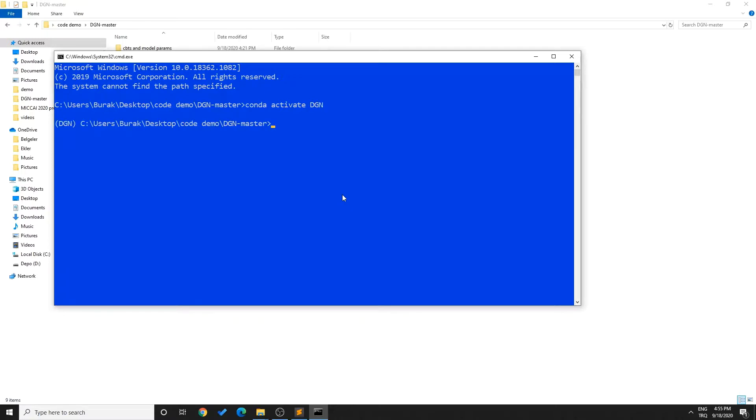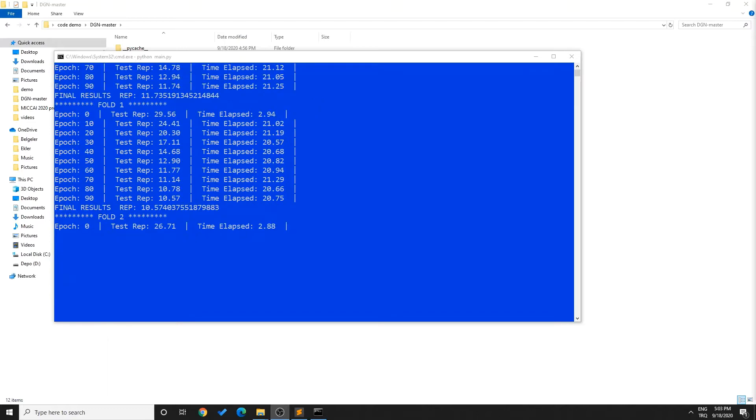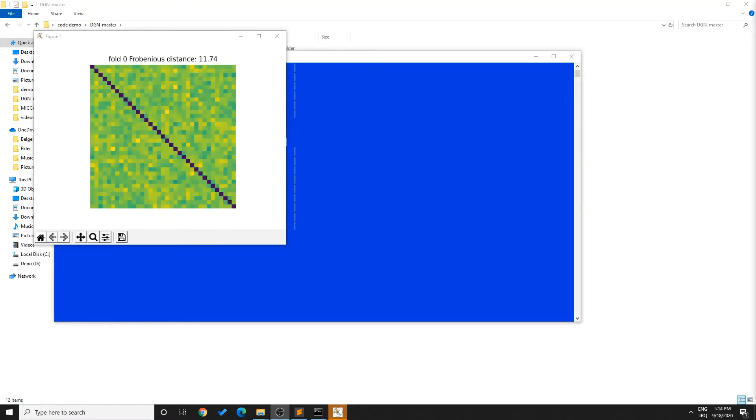Finally, type in python main.py to run the DGN on a simulated dataset. After the training, Frobenius distance between testing samples and the generated CBT will be displayed along with the adjacency matrix of the created CBT for each fold.